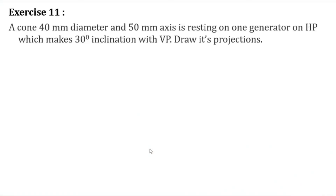The first exercise for today's session is a cone — 40 millimeter diameter and 50 millimeter axis — resting on one generator on HP, which makes a 30 degree inclination with the VP. We need to provide its projections. This is the case of a cone, and the dimensions given are 40 millimeter diameter and 50 millimeter axis.